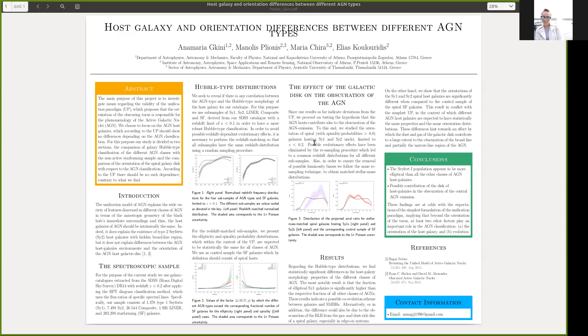The main purpose of this study is to investigate aspects regarding the validity of the simple AGN unification paradigm. In particular, we focus on the AGN host galaxies, which according to the unification paradigm should show no systematic differences depending on the AGN classification.